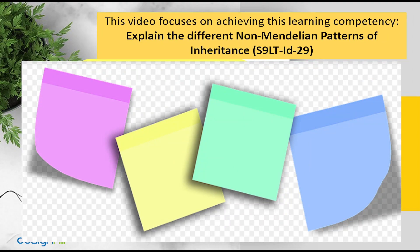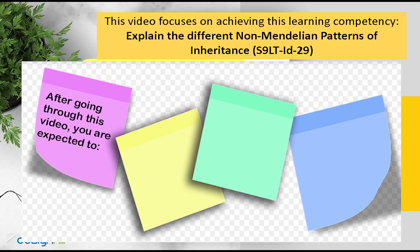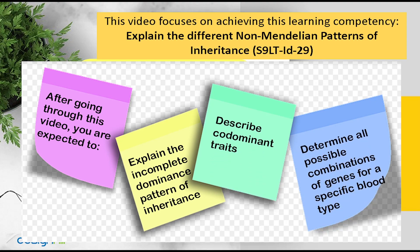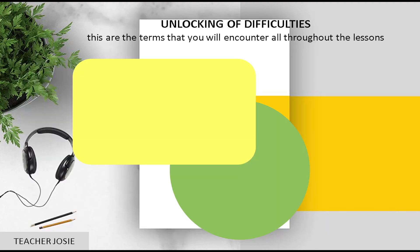This video focuses on achieving this learning competency: explain the different non-Mendelian patterns of inheritance. After going through this video, you are expected to explain the incomplete dominance pattern of inheritance, describe codominant traits, and determine all possible combinations of genes for a specific blood type.